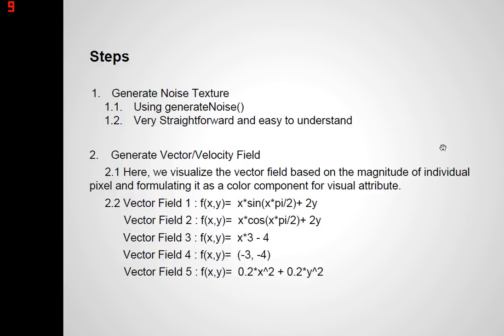The first Java class is the noise texture and it's very straightforward — it's not complicated. The next is the velocity or vector field Java class, also not so complicated. Here you can see the five vector fields that I have used. There is a website called Wolfram Alpha where you can type your own equation and create your own vector fields. Just choose whichever equation you want and make it complicated — the more complicated, the more fun it is to see the result of 2D LIC.